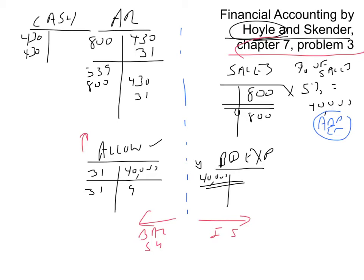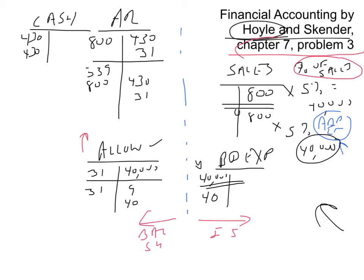At the end of year two you have to estimate bad debt expense again using the percentage of sales method — the add-in method. With $800,000 in sales and 5%, we get $40,000 again. So the year-end adjusting entry is debit bad debt expense for $40,000 and credit the allowance for doubtful accounts for $40,000. That is how the percentage of sales method operates.